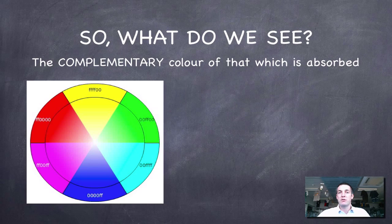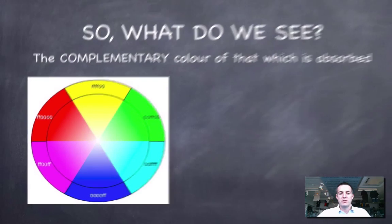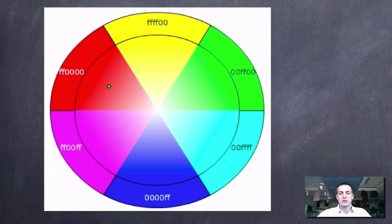Now, what does that mean for what we see? Well, as it happens, we see the complementary color of that which is absorbed. So this wheel here is kind of, I've put it here to help us understand what we mean by complementary colors.